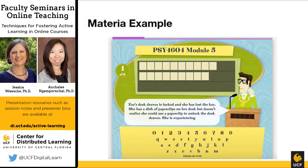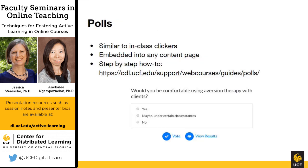Another Materia widget I use is hangman. In this one, I go beyond a simple definition and ask a more applied question. For example: 'Zoe's desk drawer is locked and she's lost the key. She has a dish of paper clips but doesn't realize she could use one to unlock the drawer. She is experiencing ___.' Students think about the terminology and come up with 'functional fixedness.' This is a nice way for students to review course material that feels more fun than a basic quiz. I get a lot of really positive feedback about Materia from my students.